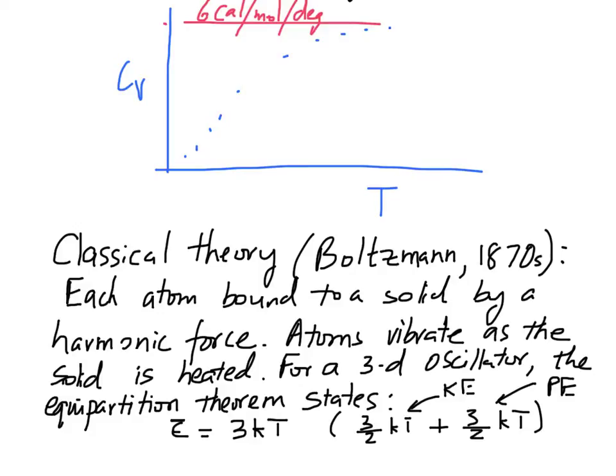Now since you have n atoms in the system, the total energy is 3nkT, and if you have one mole of atoms, it's 3kT times the Avogadro number. That's the total average energy at any given temperature. To determine the specific heat, you take that expression and find the first derivative with respect to temperature, and you are left with 3nk.